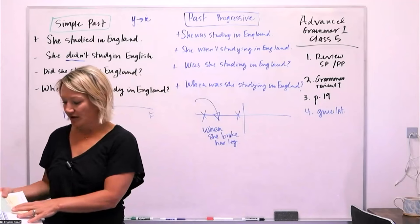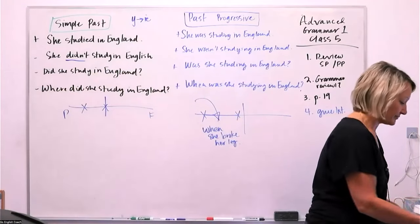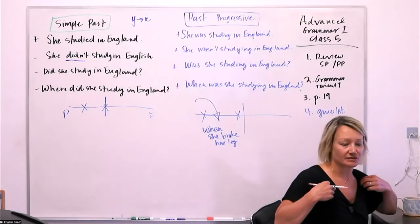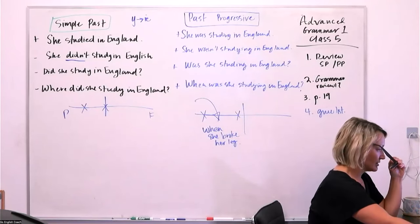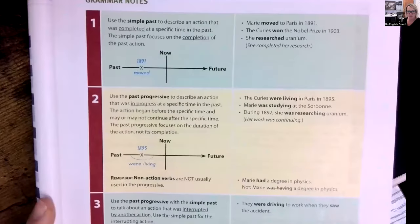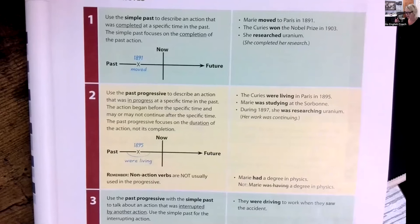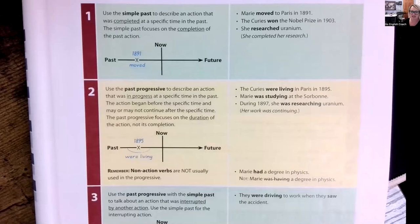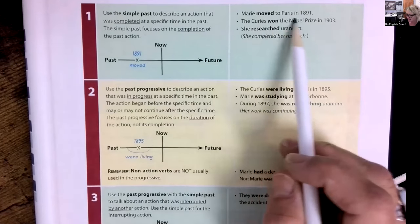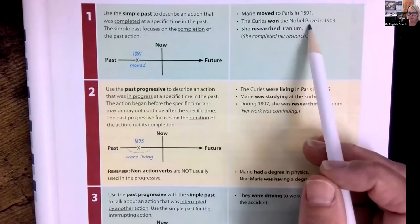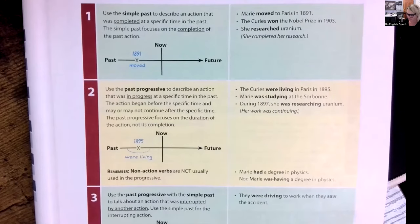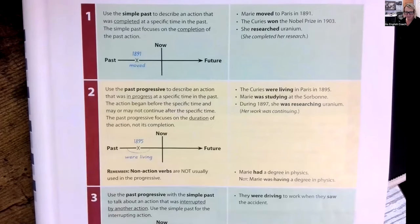The negative is she wasn't studying in England. The question, the yes, no question was, was she studying in English? Again, like this one with did, we can say, wasn't she studying in England? It's more of a clarifying question. So maybe you thought she was studying in English, but you're not sure. So you're asking, wasn't she studying in England? And then when was she studying in England? Is that the WH question that requires or elicits, or you're asking for more information. So when was she studying in England? The answer, of course, for when is going to be a timeframe. You can say two years ago, last month, 10 years ago, in March, any of those things that kind of reference in the past. Okay. Great.